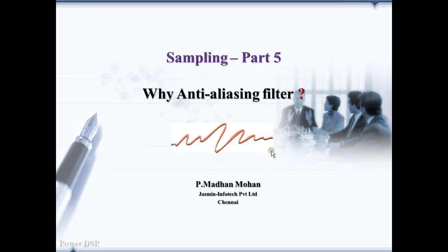Welcome guys, this is P. Mother Morgan coming to you from Jasmine Infotech. Aliasing is an undesirable effect and it can be prevented by choosing the right sampling frequency. If our sampling frequency is twice as high as the maximum frequency in the input signal, then aliasing would not occur.